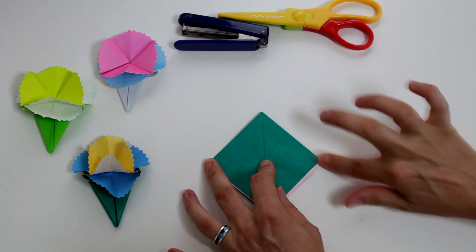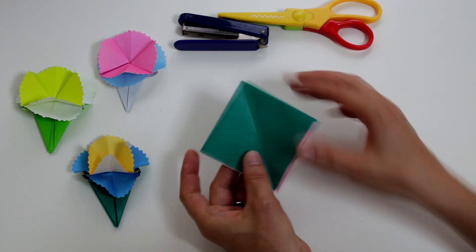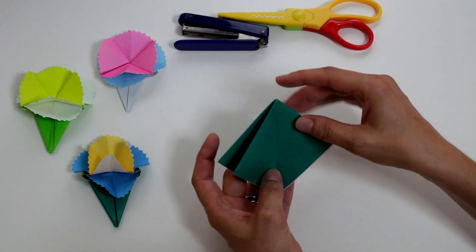That means now it looks like it is a square and it has four flaps, two on each side, and it has an open part and a closed part.